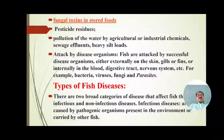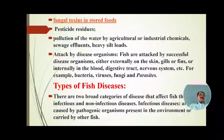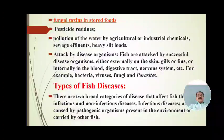Another important source of toxins stored in ponds is heavy silt loads — tar dust, soot dust, silt dust, and waste soil particles. Due to these heavy silt loads, fish become diseased and are affected by parasites.